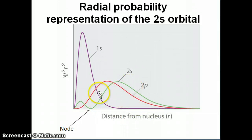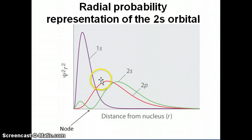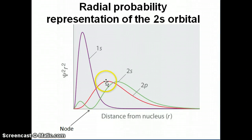The total radial probability for the 2s would be the area under both curves added together. The 2p orbital, shown as the red curve, has one maximum located further away than the 1s maximum. This has important consequences for orbital energy: the further away the electron is from the nucleus, the less electrostatic interaction it has and the less stable it becomes, since stability comes from the electron's interaction with the nucleus.